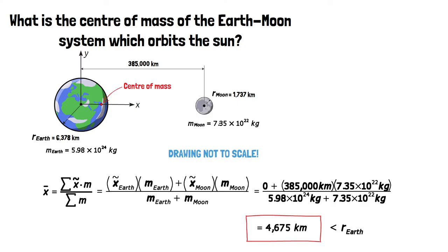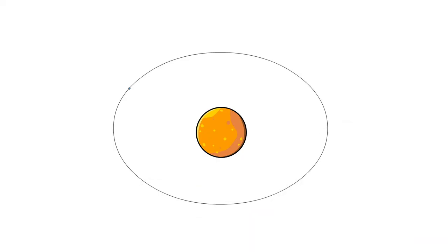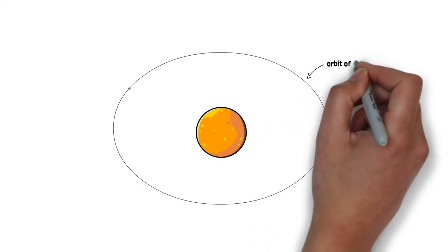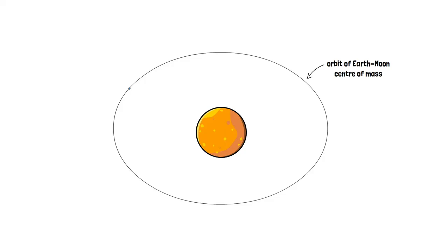What does this practically mean? Well, that elliptical orbit that we believe the Earth follows is actually the orbit of the center of mass of the Earth-Moon system.